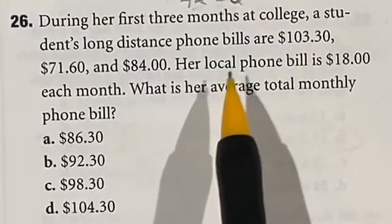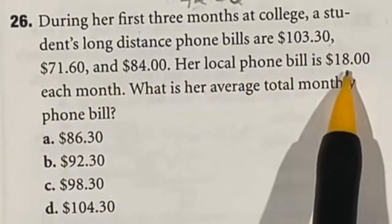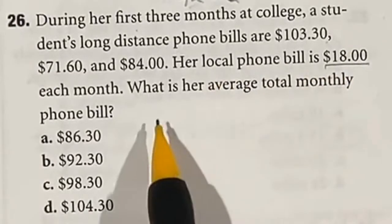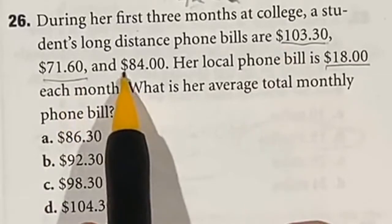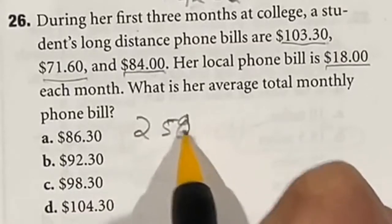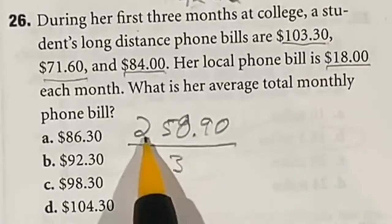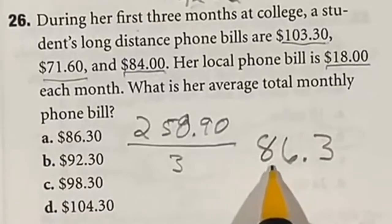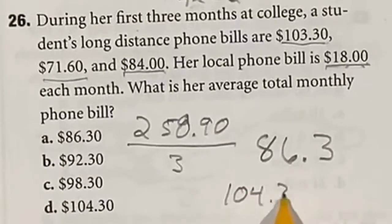Question 26 asks for the average phone bill over 3 months. They have long distance charges for each month, plus a local phone bill of $18 each month. We'll deal with that $18 at the very end since it's the same every month, adding it to our final average. First, add the three long distance amounts: $103.30, $71.60, and $84.00. Adding those up gives $258.90. Dividing by 3 gives $86.30. Adding the $18 back on gives $104.30, which is answer D.